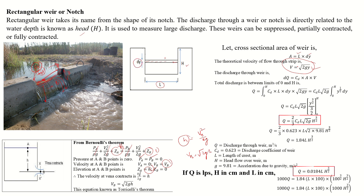Here I am considering the excess amount of water flowing as dy, so velocity equals under root 2gY. In this small portion, the discharge Q equals area into velocity. The area equals length into dy. The discharge depends on Cd — the coefficient of discharge — which accounts for the geometry of your weir, whether it is sharp-crested or otherwise.